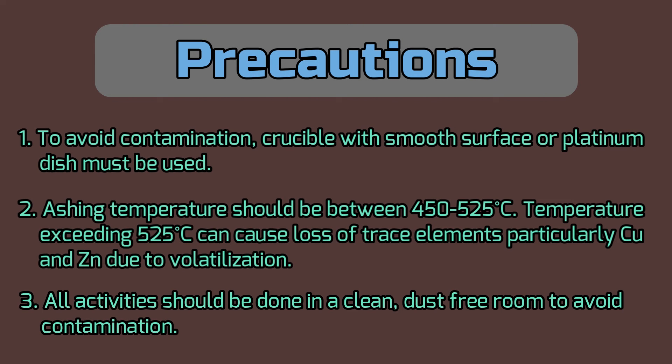Some precautions should be followed throughout the sample preparation. To avoid contamination, crucible with smooth surface or platinum dish must be used. Ashing temperature should be between 450 to 525 degrees Celsius. Temperature exceeding 525 degrees Celsius can cause loss of trace elements, particularly copper and zinc due to volatilization.